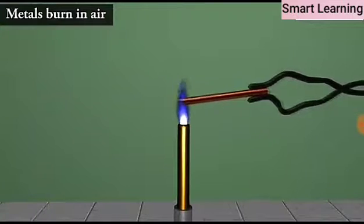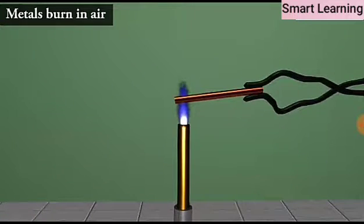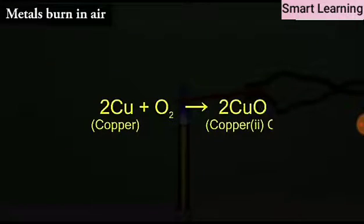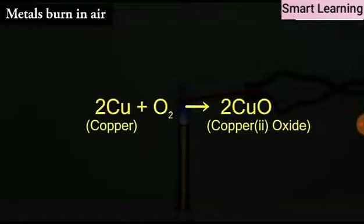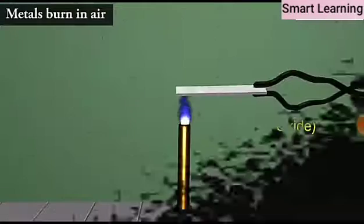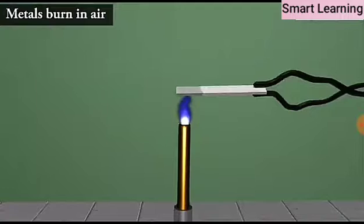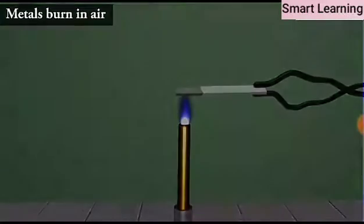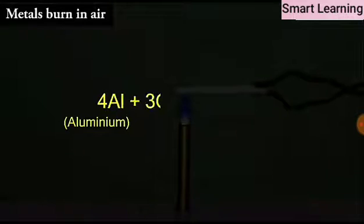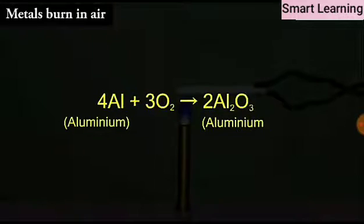For example, when copper is heated in air, it combines with oxygen to form copper oxide, a black oxide. The reaction being: 2Cu plus O2 gives 2CuO. Similarly, aluminum forms aluminum oxide. The reaction being: 4Al plus 3O2 gives 2Al2O3.